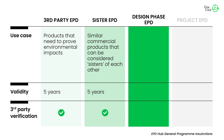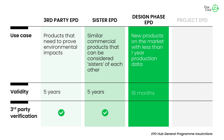Then we have the design phase EPD, which is also third-party verified. It is great for new products on the market that don't yet have that one year of production data. These have an 18-month validity rather than five years.